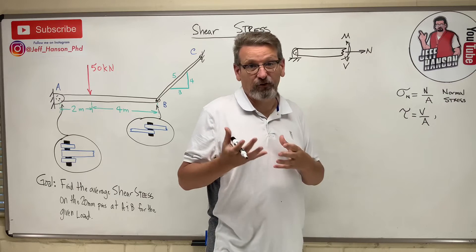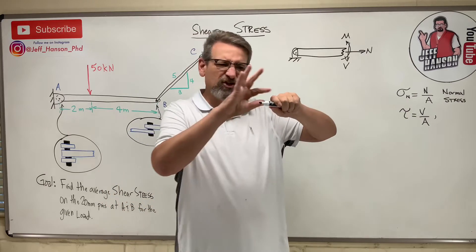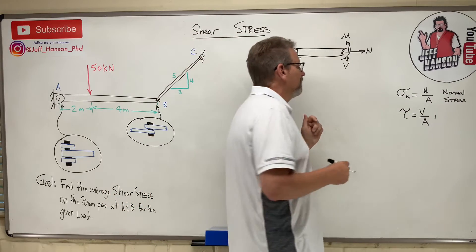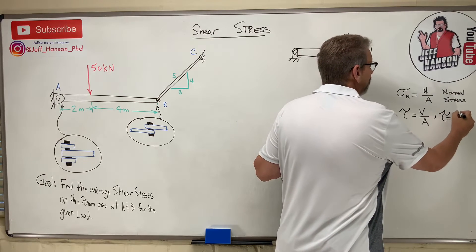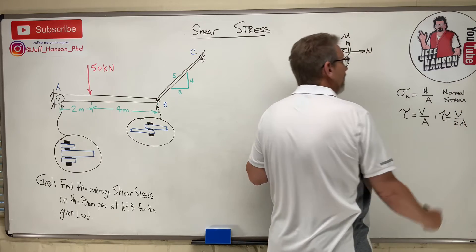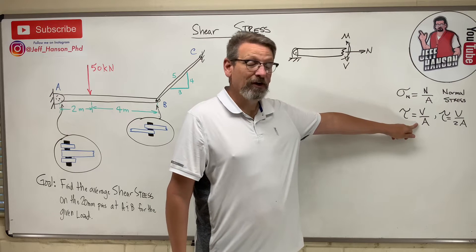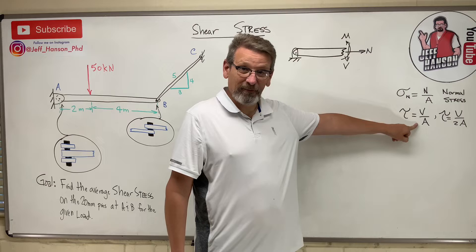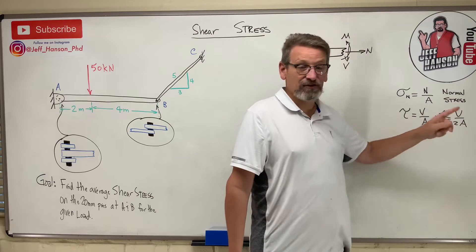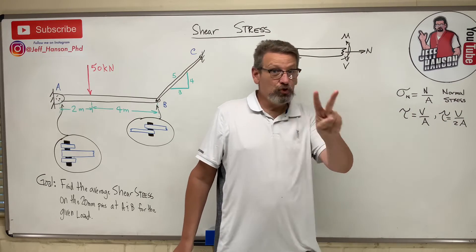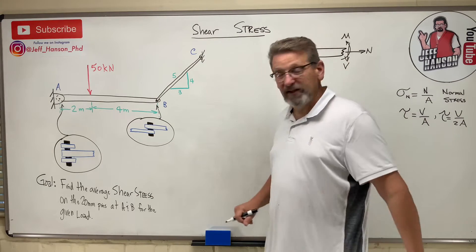You can't get normal stress and shear stress confused. The way I think about shear stress is just a 'tearing stress' — it's trying to tear something in half. We also have τ = V over 2A for double shear, because you're having to shear through twice as much area as you do for a single shear.